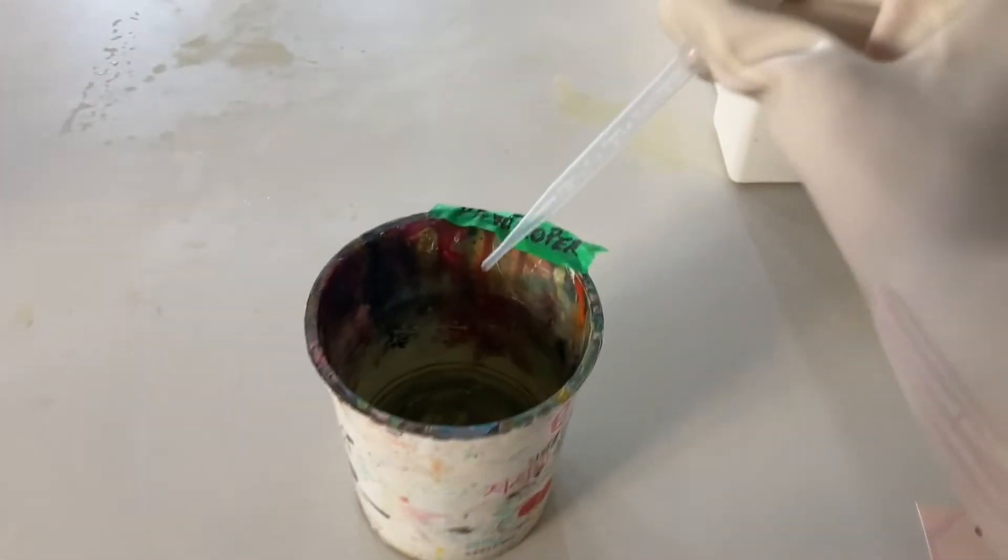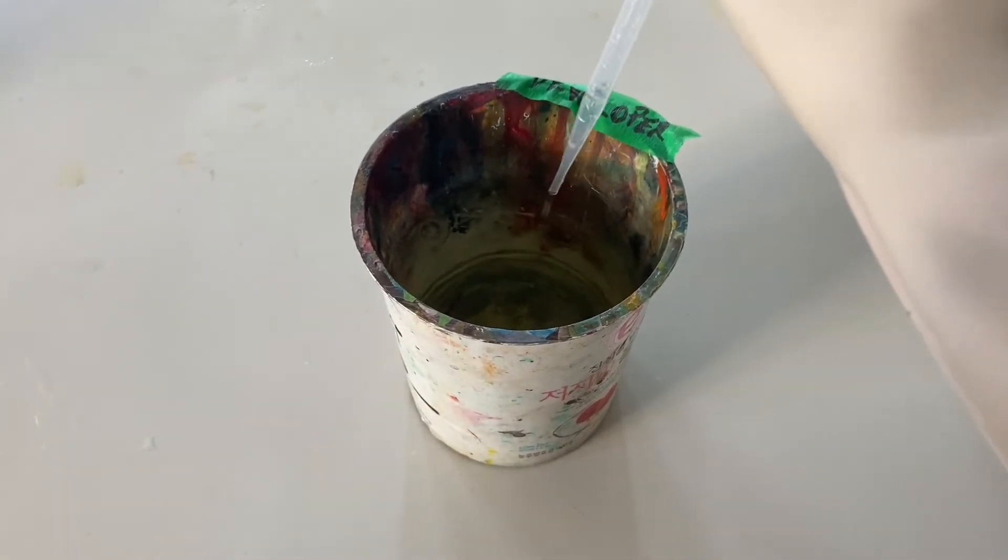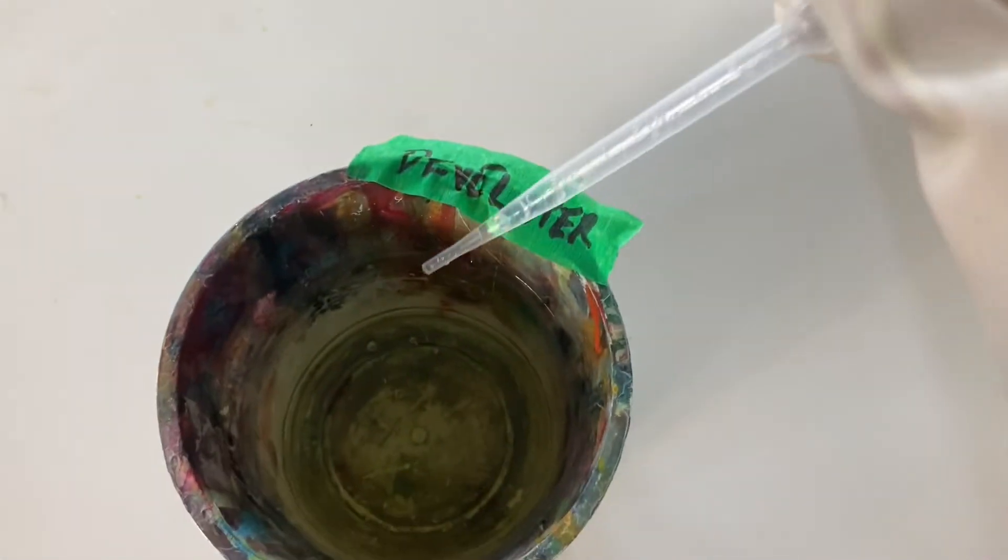The first step for creating a chemigram is getting the white film. The film is light sensitive, so the film must stay in the case when you are preparing for a chemigram. When everything is ready, it's time for taking out the film.